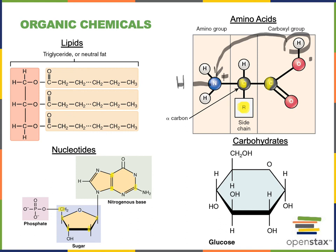In the bottom right we can see the last major class of organic chemicals: the carbohydrates. All carbohydrates have the basic chemical formula of CH2O, so for every carbon there are two hydrogens and one oxygen. Here we see the structure of glucose, which has six carbons, 12 hydrogens, and six oxygens, so the formula of glucose is C6H12O6. Glucose is a polar organic chemical, but it is not an ion.